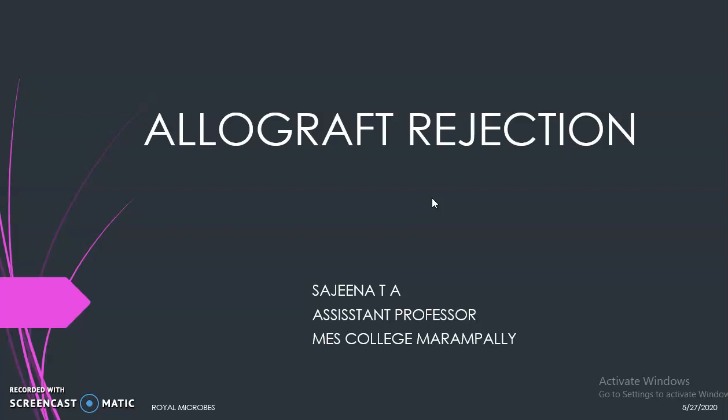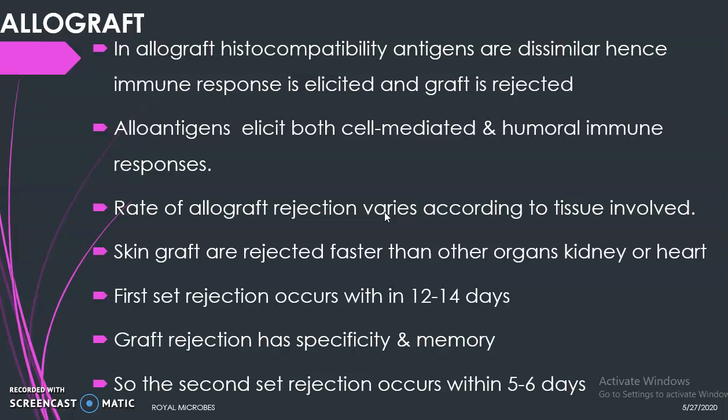Today we can see allograft rejection. Allograft rejection occurs between genetically different individuals of the same species, so the chance of rejection is very high because the histocompatibility antigens of the donor and the recipients will be different. The immune response will be elicited and the graft will be rejected. These allo antigens of the allograft can elicit both cell-mediated and humoral immune responses.